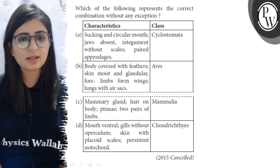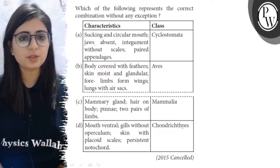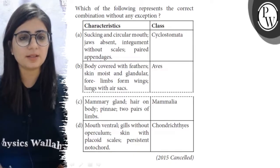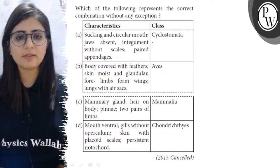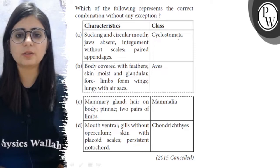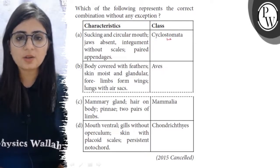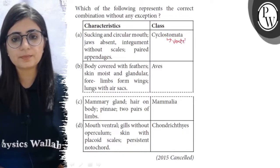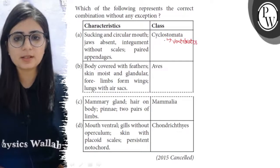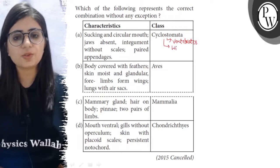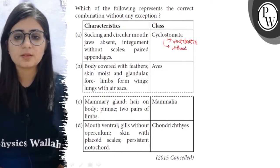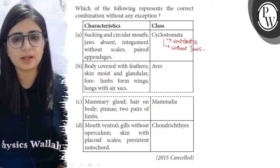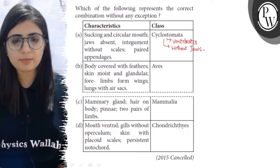The first statement is: sucking and circular mouth, jaws absent, integument without scales, paired appendages — and it is given that these are the features of class Cyclostomata. Cyclostomata are the primitive vertebrates, they are without jaws. The jawless vertebrates are placed in class Cyclostomata and they have some peculiar features.